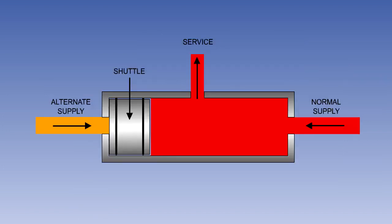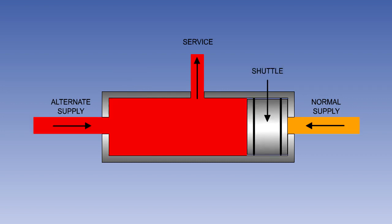Shuttle valves are often used in landing gear and brake systems to enable an alternate hydraulic system to operate the same actuators as the normal system. During normal operation, free flow is provided from the normal system to the service, and the alternate line is blocked. If normal system pressure is lost and the alternate system is selected, alternate system pressure will move the shuttle valve across, blocking the normal line and allowing the alternate supply to operate the service.